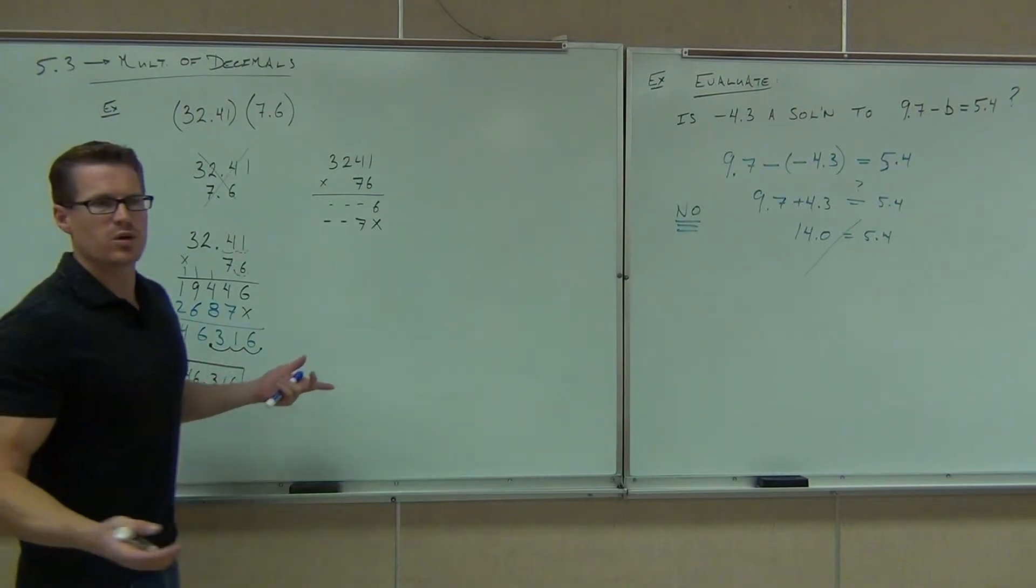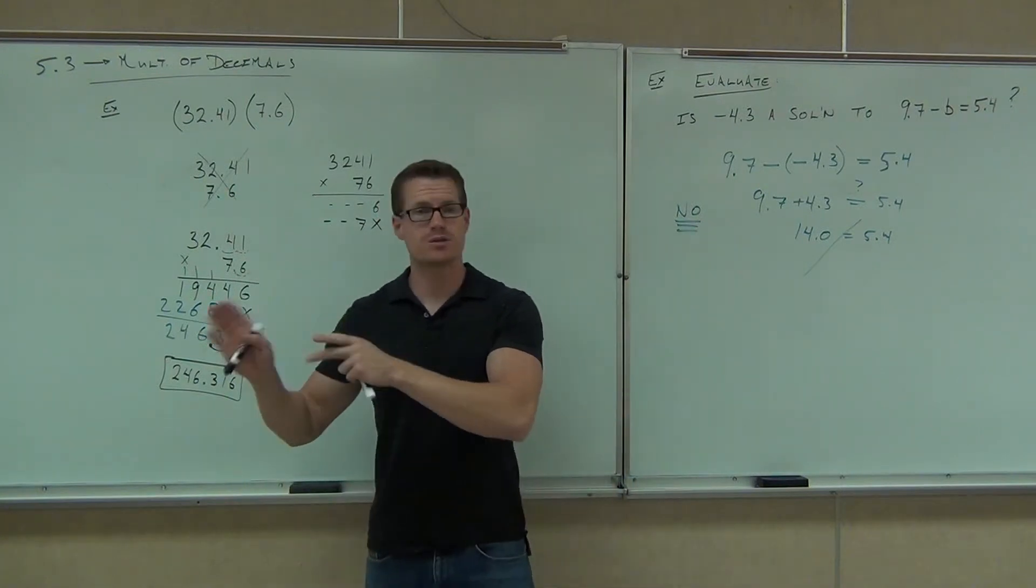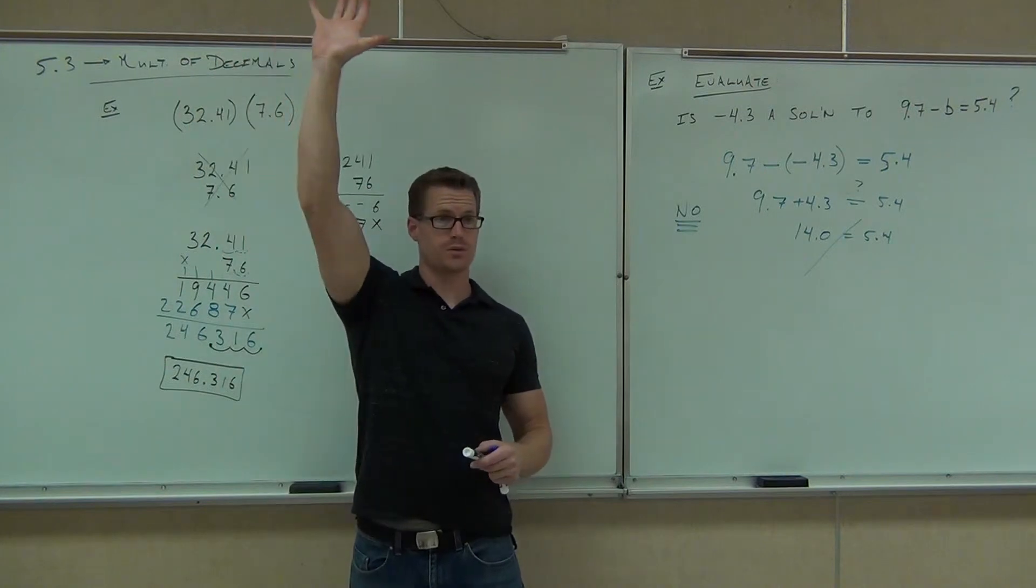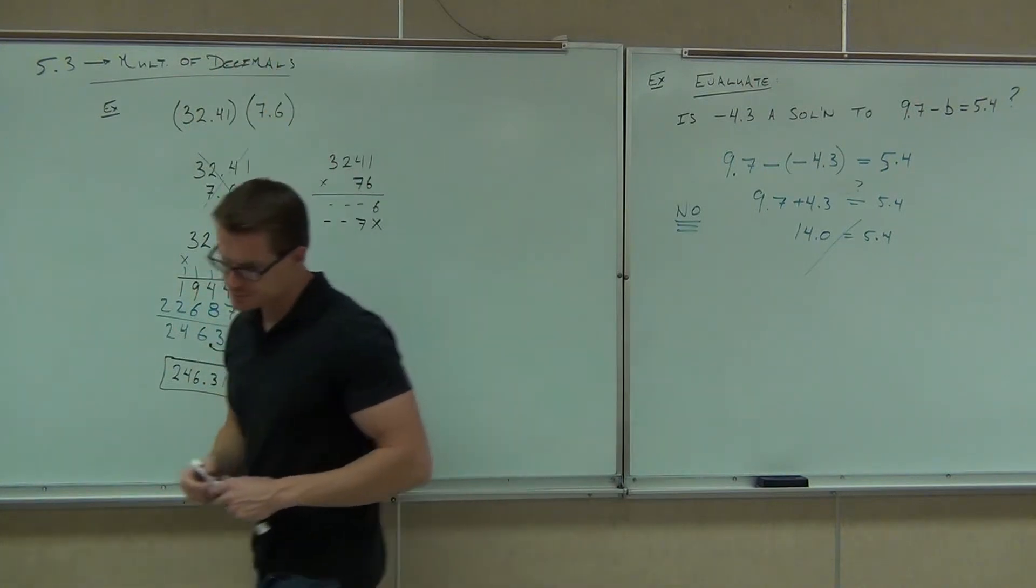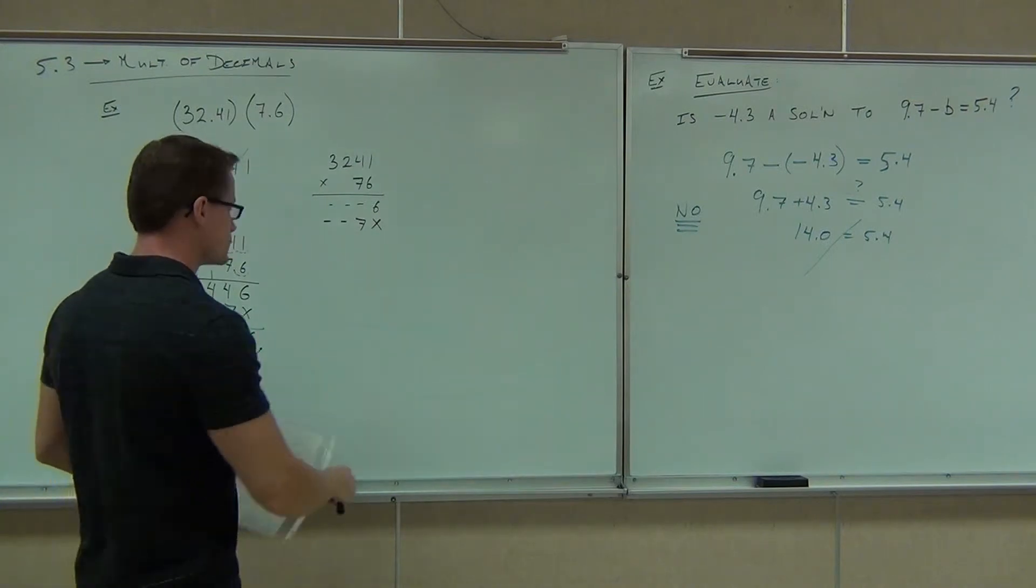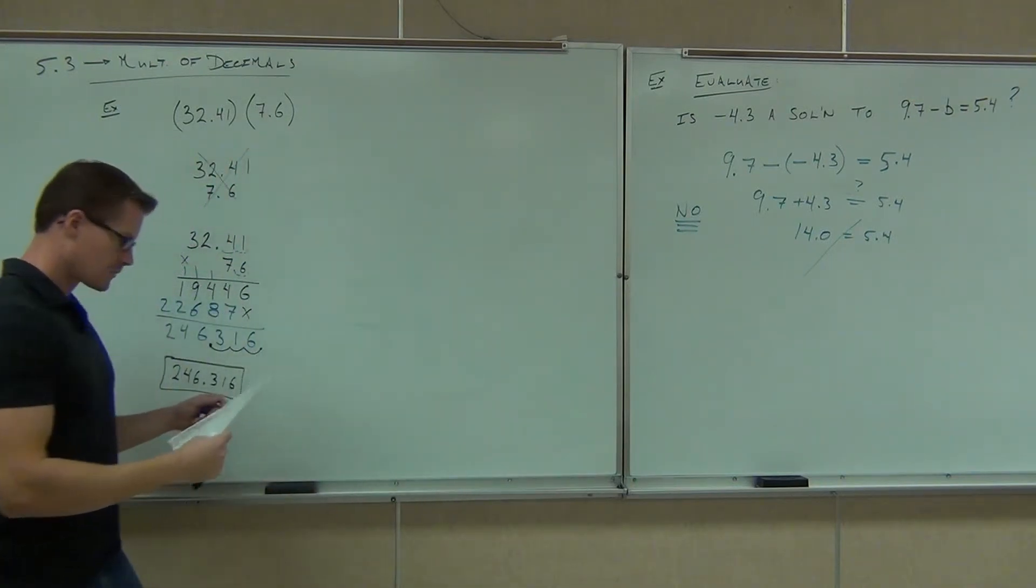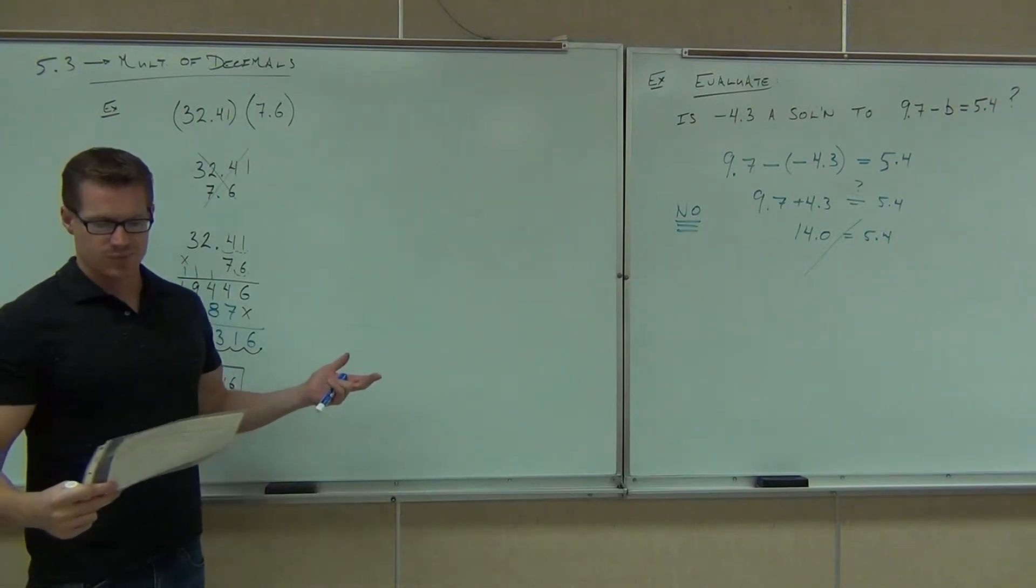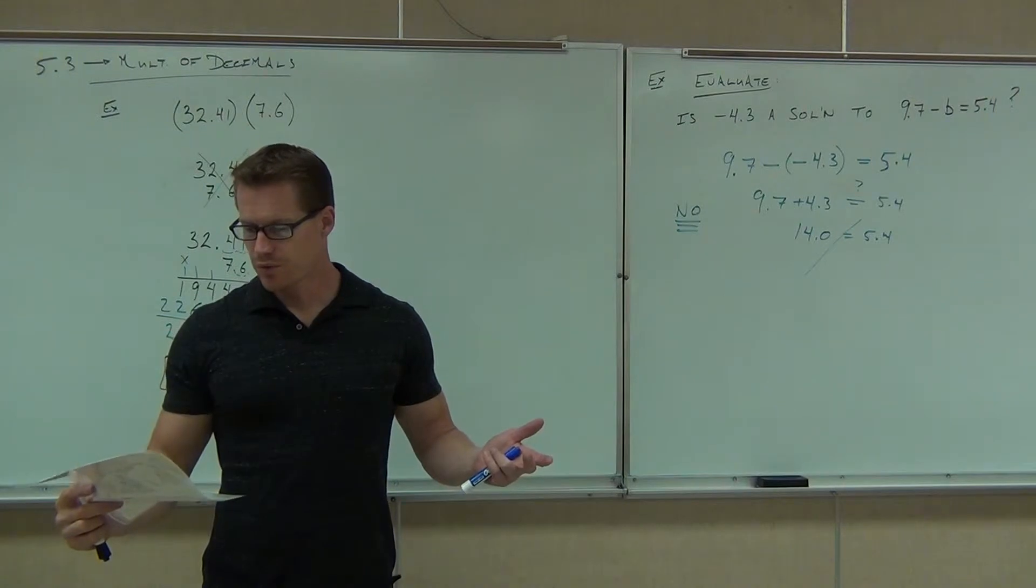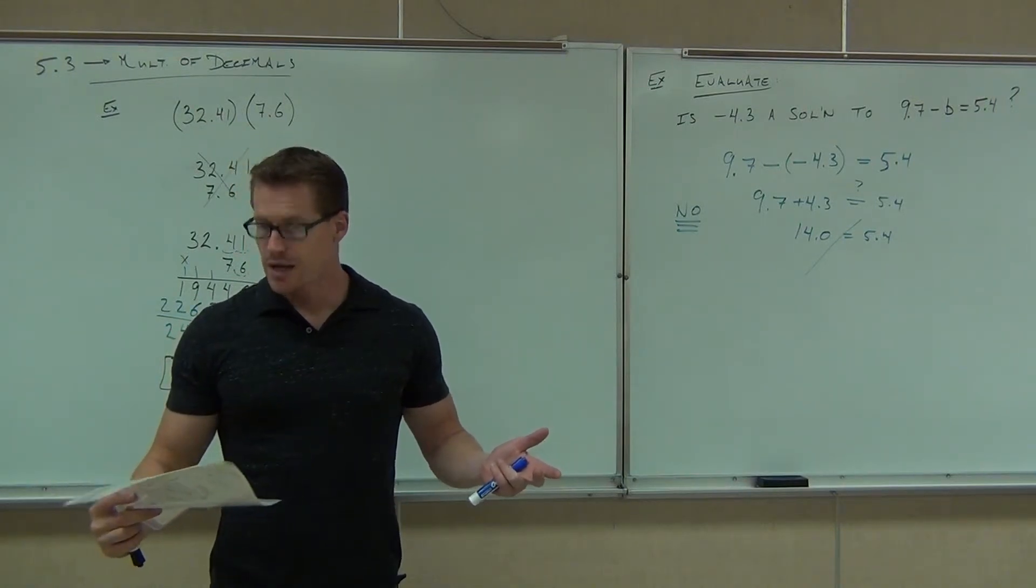So you're multiplying like you would for whole numbers. It's just at the very end, you're taking the decimal places from the right-hand side, counting those, and applying that to the product. Good deal. We'll try just really two more examples. Then we'll go ahead. I'll give you a couple on your own. We'll talk about circumference and area, what those things actually mean. And we'll move on.